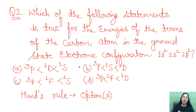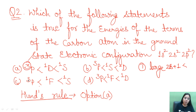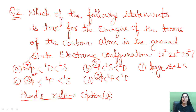The second question asks which statement is true for the energies of carbon atom terms in the ground state electronic configuration 1s² 2s² 2p². You need to identify the correct energy sequence using Hund's rules. The first rule states that the largest value of (2S+1) will have the lowest energy. Among the given terms, those with 2S+1 = 3 will have the lowest energy.